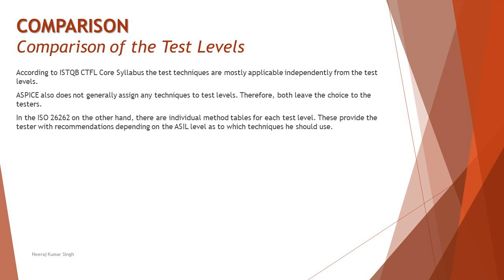When it comes to ISO 26262, on the other hand, there are individual method tables, which we saw in previous tutorials when discussing ASIL — Automotive Safety Integrity Level. There are four levels: A, B, C, and D, with A being the lowest and D being the highest safety integrity level. These method tables provide the tester with recommendations depending on the ASIL level as to which technique should be applied. So except for ISO 26262, other standards let you decide where to apply which technique, but ISO 26262 has a method table that determines the best recommended technique at any point in time.